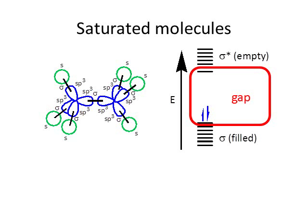We're often interested in the frontier orbitals: the highest occupied molecular orbital — the highest energy filled orbital — and the lowest unoccupied molecular orbital. These are called the HOMO and LUMO. If we take electrons away from a molecule, they'd come from the highest occupied. If we add electrons, they go to the lowest unoccupied. We're also interested in the gap between these, because promoting an electron goes from the ground state to an excited state, but requires enough energy to cross that gap.